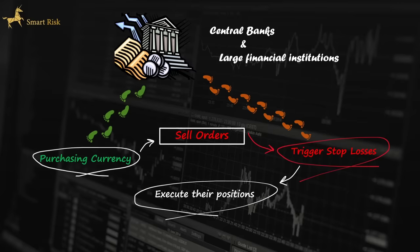If smart money intends to execute a large sell order, it requires buyers to participate in the market, because there isn't enough liquidity for them to simply take sell positions. It is often speculated that smart money may manipulate the market, creating scenarios that deceive traders into believing they have a clear understanding of price action. This creates an illusion among retail traders, making them believe they are trading on the right side of the market. However, contrary to their expectations, the market moves in the direction of their stop-loss levels, and after triggering these stops, it resumes its normal trend.